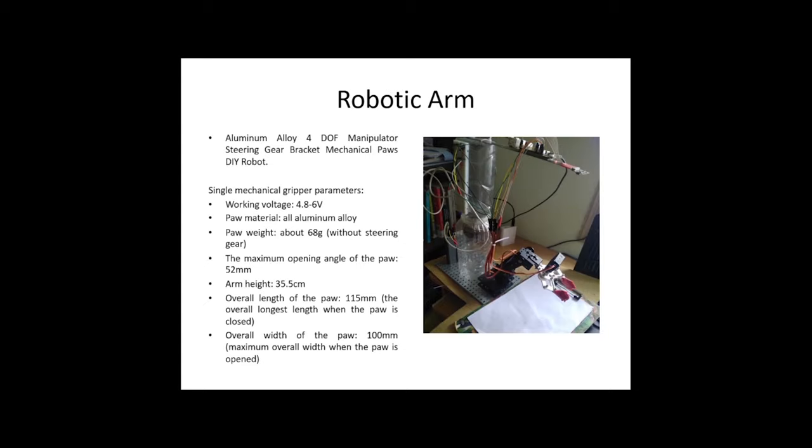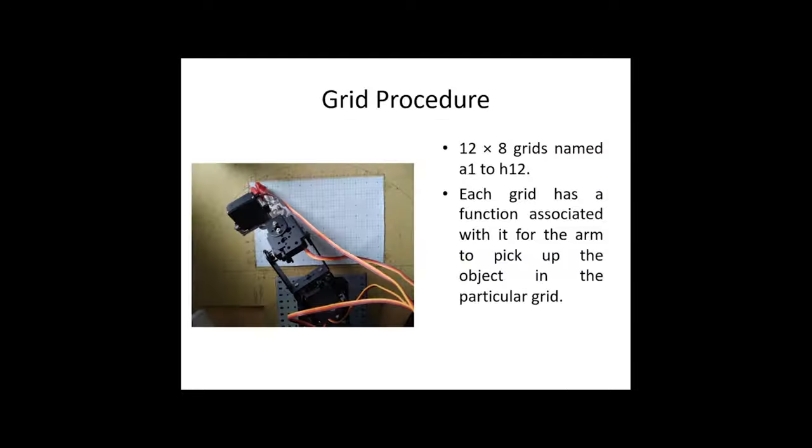When we come to the hardware module, it consists of the robotic arm. It is a four degree of freedom robotic arm that we've used along with the Pi camera, which is attached to the Raspberry Pi. The Raspberry Pi receives the image from the Pi camera as well as controls the robotic arm to pick up the objects.